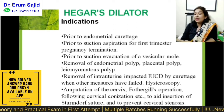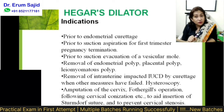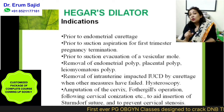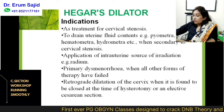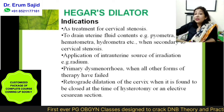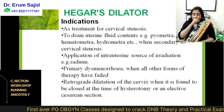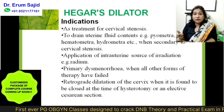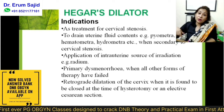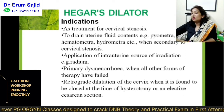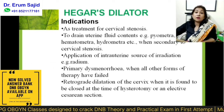In case of amputation of the cervix for the Fothergill's operation — if you know about the Fothergill's operation, which I taught in prolapse — you need to dilate the cervix; this is a component of that operation. Treatment of cervical stenosis — if there is stenosis and you want to do anything, you first dilate the cervix. To drain uterine contents like hydrometra or pyometra secondary to cervical stenosis — especially in post-radiotherapy patients who have received radiotherapy for cervical carcinoma and develop hydrometra or pyometra, you just dilate and it starts draining. Also for application of an intrauterine source of irradiation, and in case of primary dysmenorrhoea as one of the treatments.